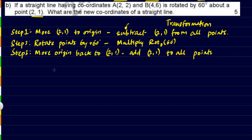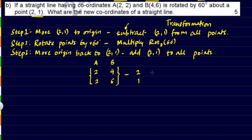So first, A and B both need to be written as column matrices. The coordinates of A are (2, 2) and the coordinates of B are (4, 6), written in column matrix format. For step 1, we subtract (2, 1) from all the points — (2, 1) and (2, 1) — since there are two points we need two columns.